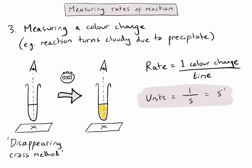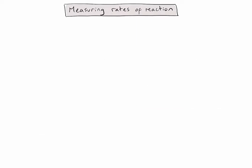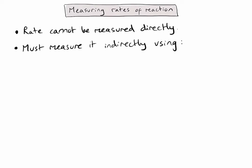Let's now consider the key points from this video. Firstly, because rate cannot be calculated or measured directly, we have to measure it indirectly using one of three methods. Firstly, we could measure the change in mass over time.